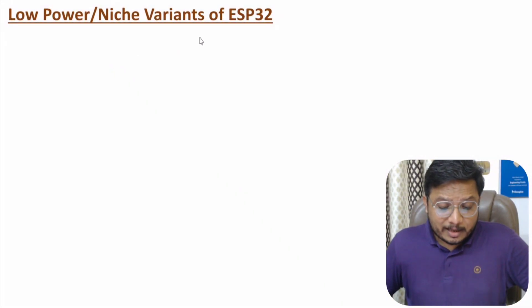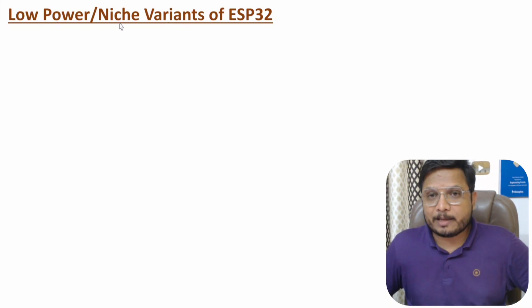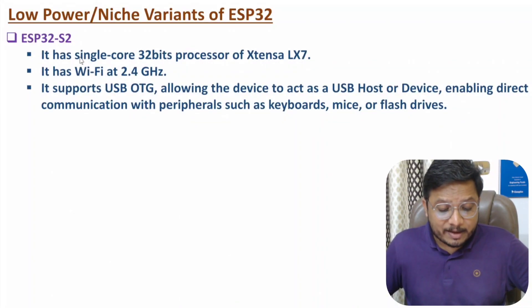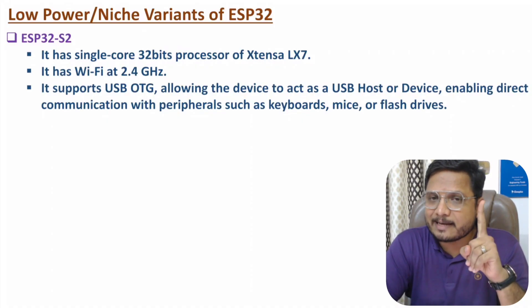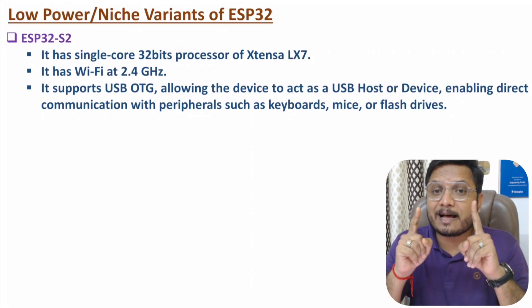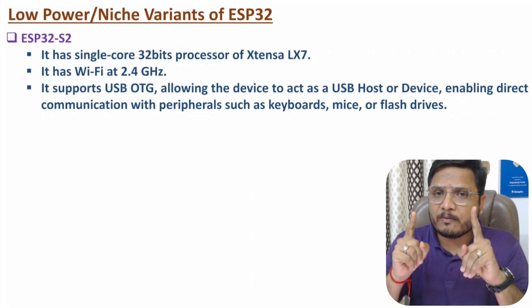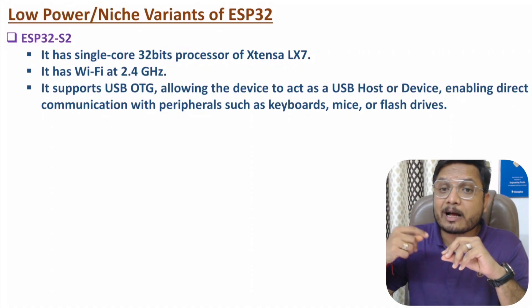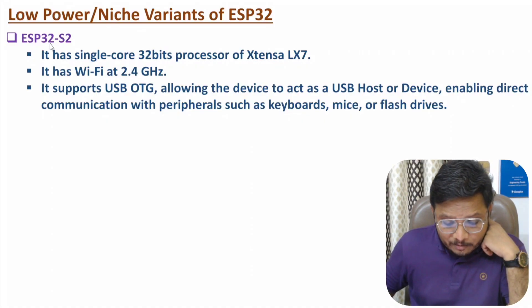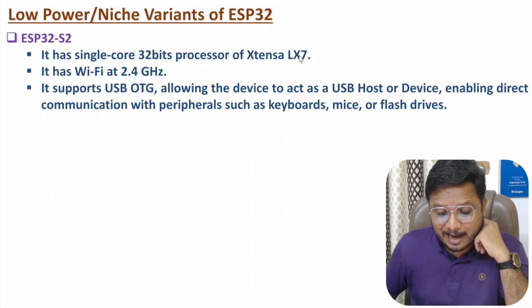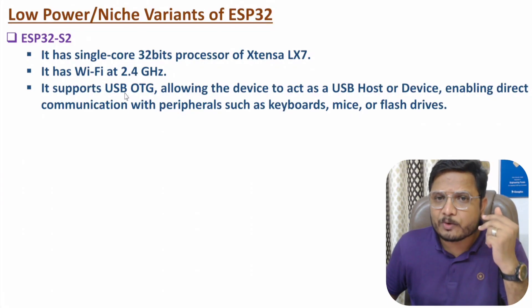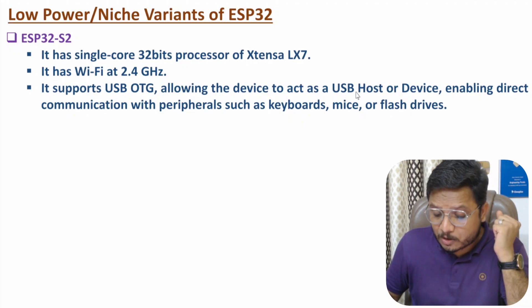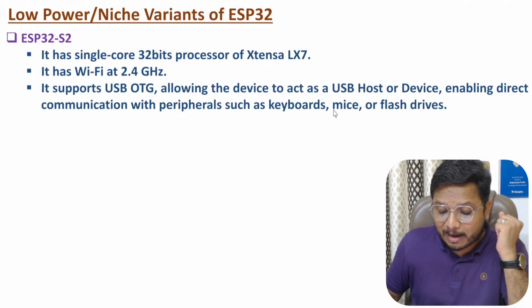Now I'll discuss about ESP32 variants with respect to low power or niche applications. The first one is ESP32 H2. It has a single core 32-bit processor of Xtensa LX6. With ESP32, we have two categories of processors: Xtensa LX6 and Xtensa LX7. LX7 has higher computational capabilities. This variant has a single core 32-bit processor of Xtensa LX7. It has Wi-Fi at 2.4 GHz and also supports USB OTG, enabling direct communication with peripherals such as keyboard, mice, or flash drive.